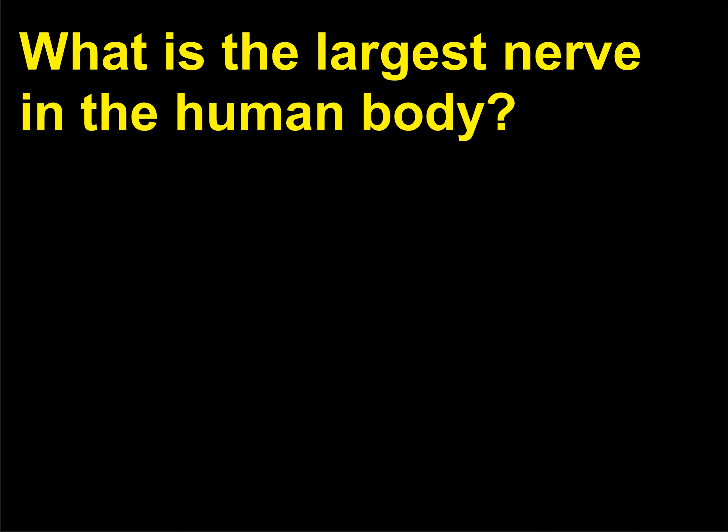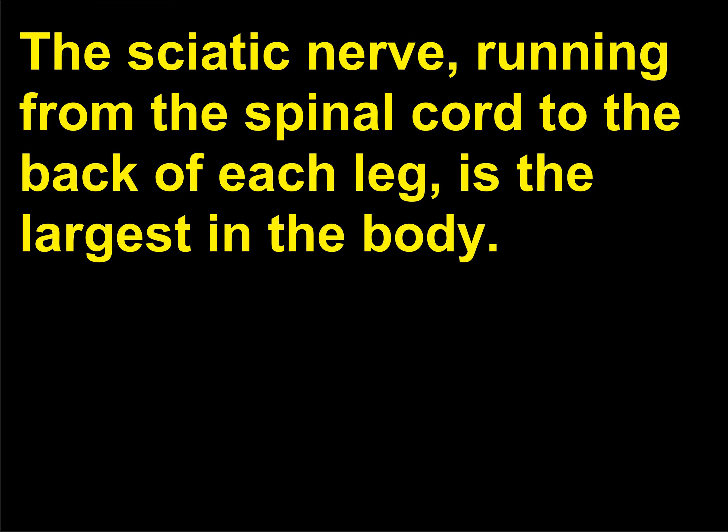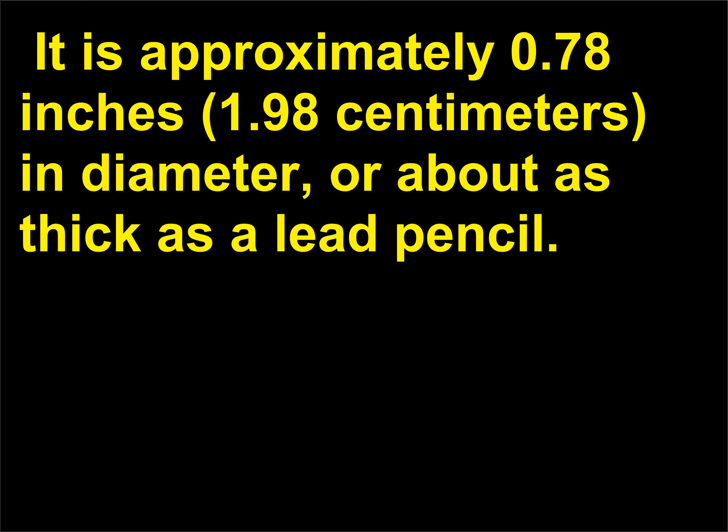What is the largest nerve in the human body? The sciatic nerve, running from the spinal cord to the back of each leg, is the largest in the body. It is approximately 0.78 inches in diameter, or about as thick as a lead pencil.